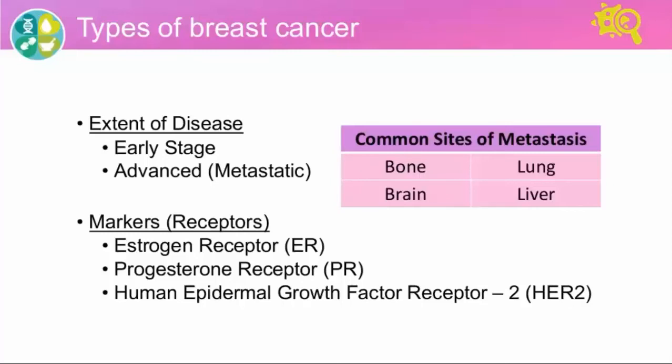We know that hormones can attach to the receptors inside cancer cells and stimulate growth. A third important marker is HER2, which is the abbreviation for human epidermal growth factor receptor number two. HER2 is on the surface of cancer cells and, when turned on, can cause cells to grow and divide. Some breast cancer cells either produce too much of it or have too many HER2 genes.